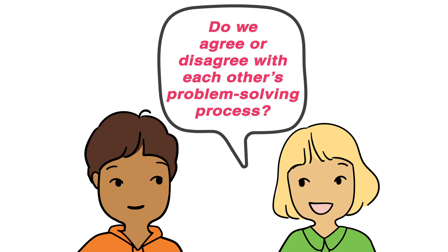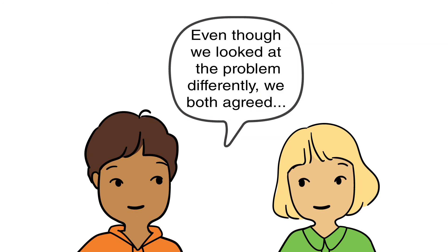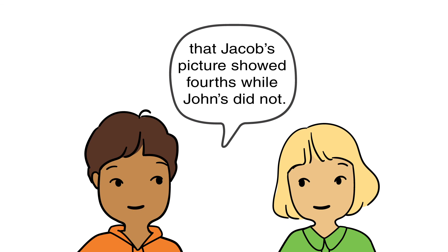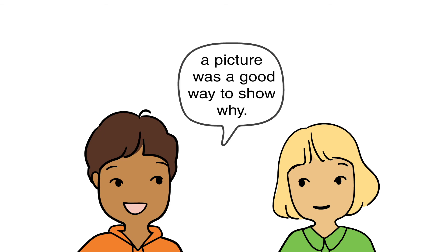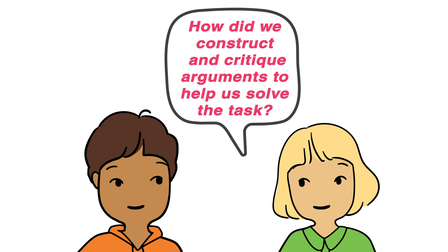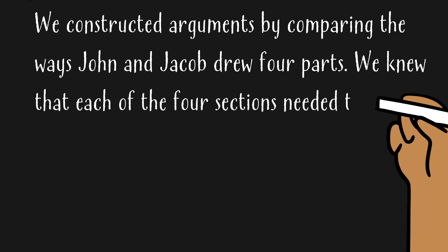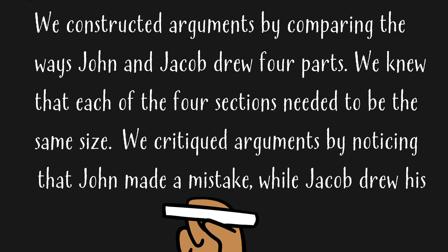Do we agree or disagree with each other's problem-solving process? Even though we looked at the problem differently, we both agreed that Jacob's picture showed fourths while John's did not. We noticed that making a model or drawing a picture was a good way to show why. We constructed arguments by comparing the ways John and Jacob drew four parts, knowing that each of the four sections needed to be the same size. We critiqued arguments by noticing that John made a mistake while Jacob drew his rectangle correctly.